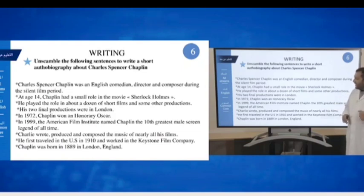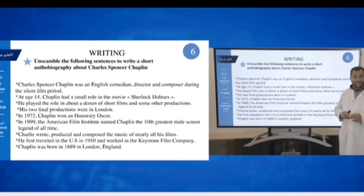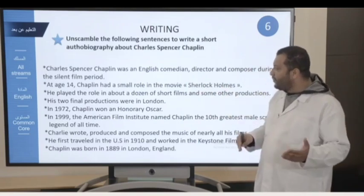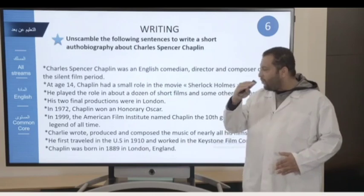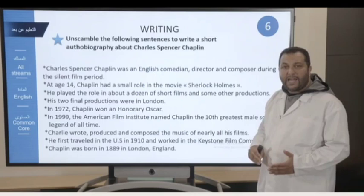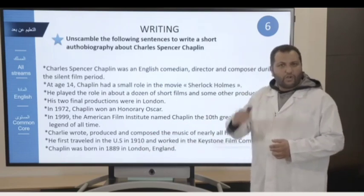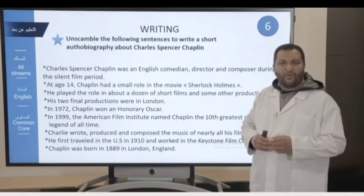The first one is capitalization and punctuation. For example, as you will see here, in all the sentences we have capital letters. Why? Because each sentence starts with a full stop. But you should start with the priorities, and these priorities can be clear and understood, for example, from the dates. Here we have 1972 and we have 1999, so please try to go in order through time. We also have 1910. So which one is first, which one is second, which one is third? These skills can be very helpful. Take your time and I will come back to you soon.